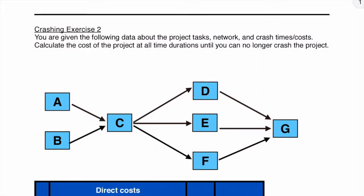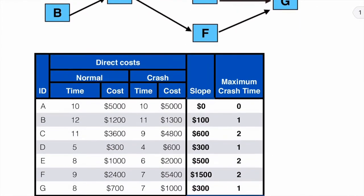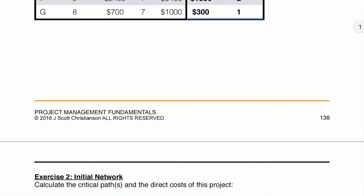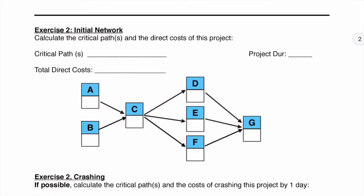So let's walk through how to solve this crashing exercise. We've been given a network diagram. We have also been given a table that contains our normal time and costs, our crash time and costs, and once again the slope. If you remember from the first exercise, that slope is the amount per day it will cost to crash these various tasks. We are also given the maximum crash time. Once again we have a task that cannot be crashed. So what we want to do is figure out the initial network, the critical path, because we only want to crash those things that are on the critical path.